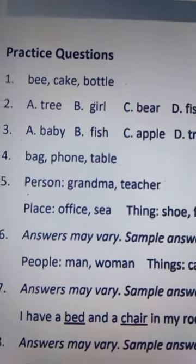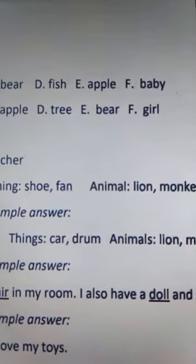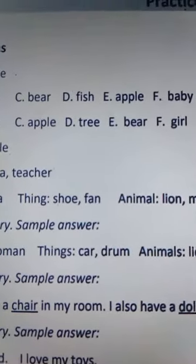Match the pictures and the words. Write the word next to the correct letter. The answers are: A — tree, B — girl, C — bear, D — fish, E — apple, F — baby.